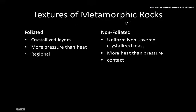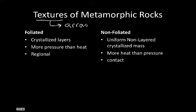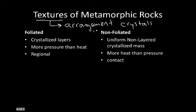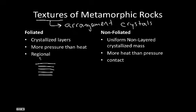Now let's talk about textures in metamorphic rock — and I don't mean textures like igneous rocks with coarse and fine. What I mean is the arrangement of the crystals. There are two different arrangements: foliated and non-foliated. Foliated means you're going to have crystallized layers, so you look for a layered appearance within the metamorphic rock. These generally form because of more pressure than heat, due to regional metamorphism.